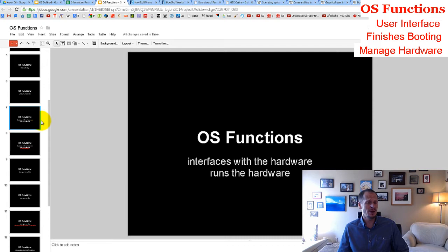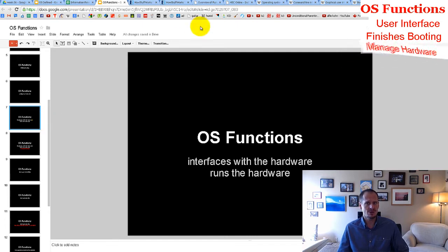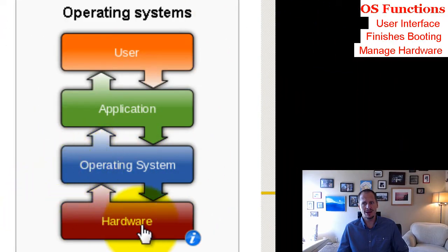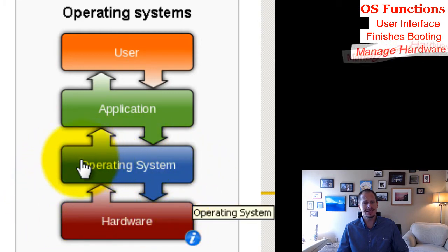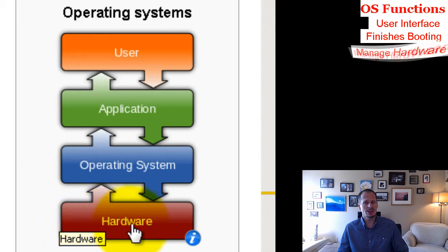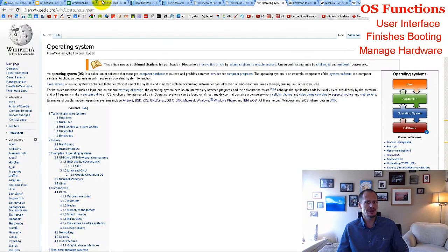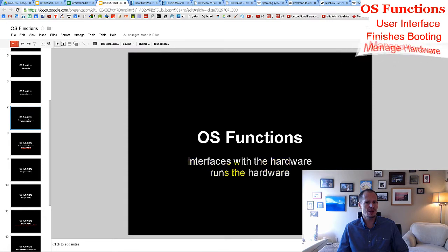What else does an operating system do? Another function is that it interfaces with the hardware and it runs the hardware. The operating system is written for specific hardware — specific CPUs with specific instruction sets. So one of its functions is to interface with the hardware and run the hardware. Another way to say it: the operating system manages the hardware.